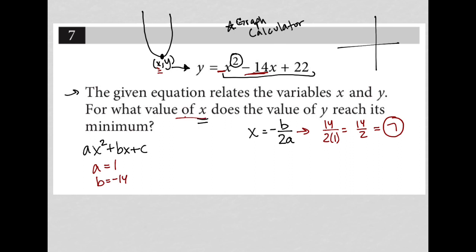7 is the x value that the question asks for - for what x value does the value of y reach its minimum? So 7 is the x value of the vertex of this parabola.